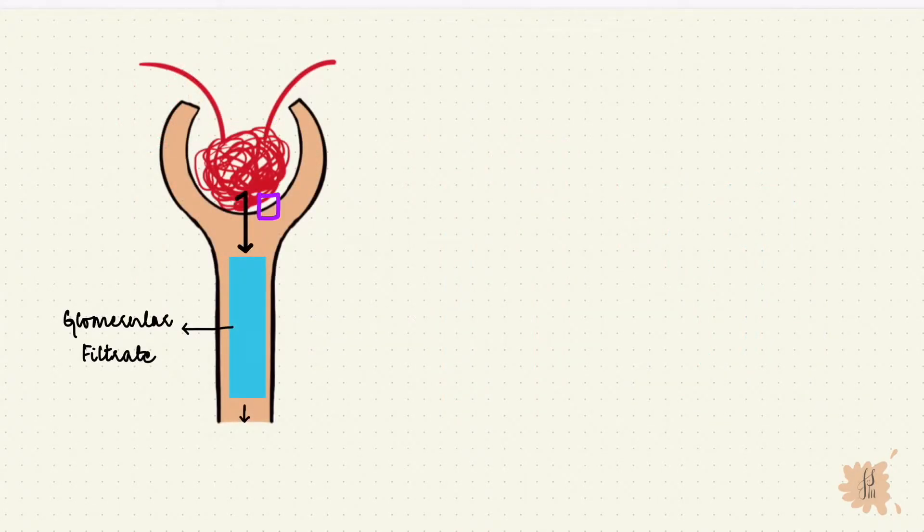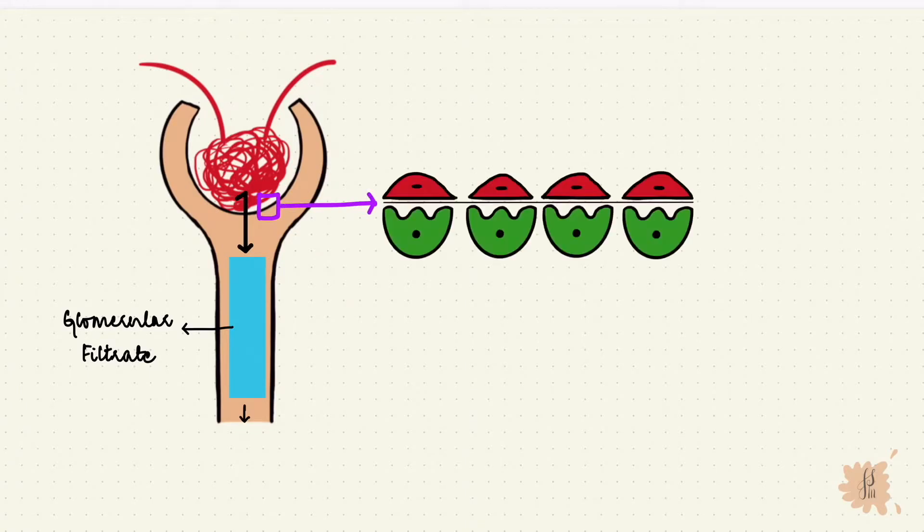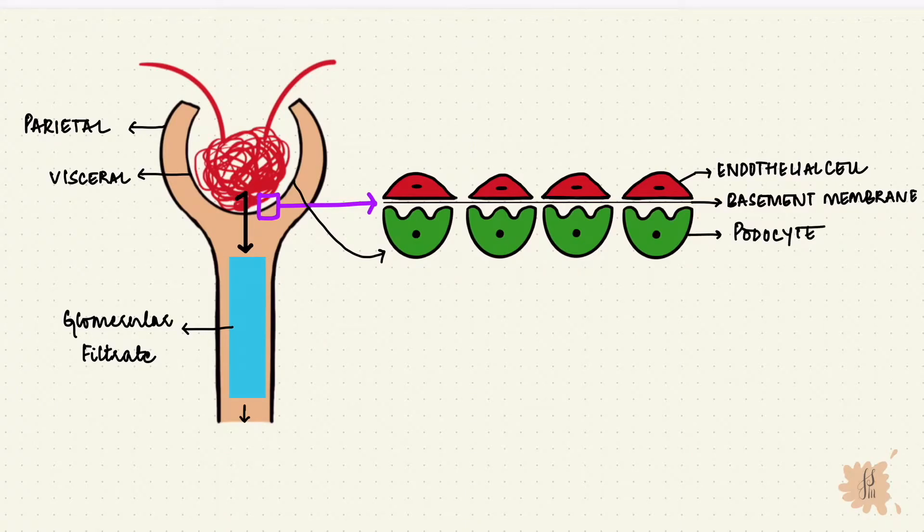The filter when magnified has three layers. Because it's a capillary, it has endothelial cells and a thin basement membrane. The endothelial cells are fenestrated, so they have spaces. The visceral layer of Bowman's capsule, which surrounds the glomerulus, has specialized cells called podocytes, and these podocytes have foot processes.